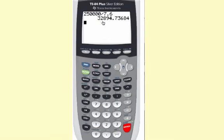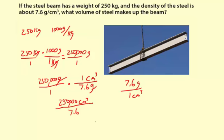32,894, or actually it rounds up to 95. So 32,895. Okay, so that is the volume of steel that makes up this beam.